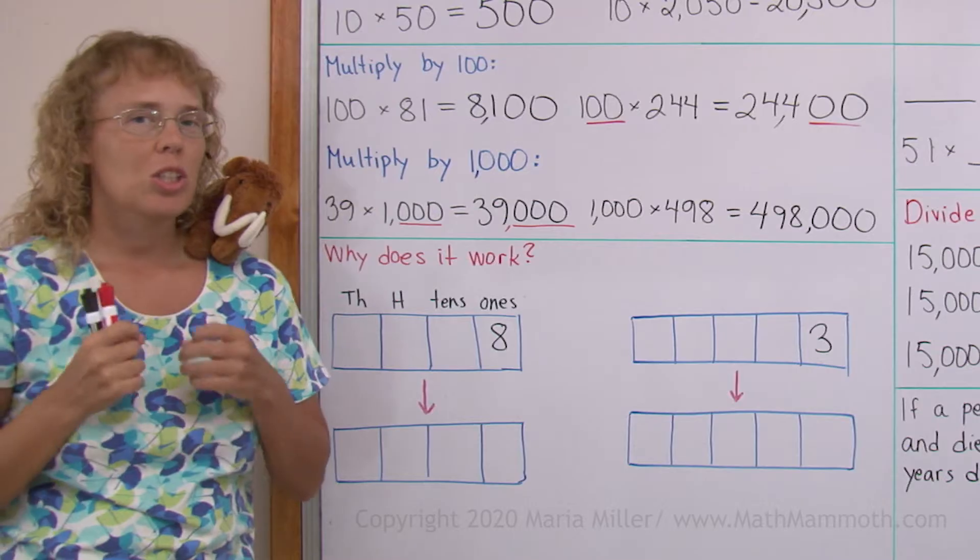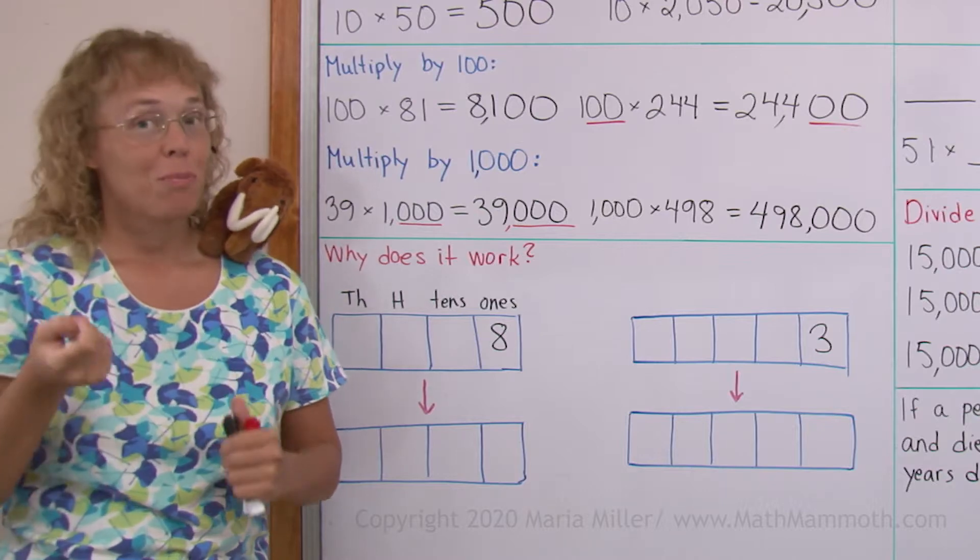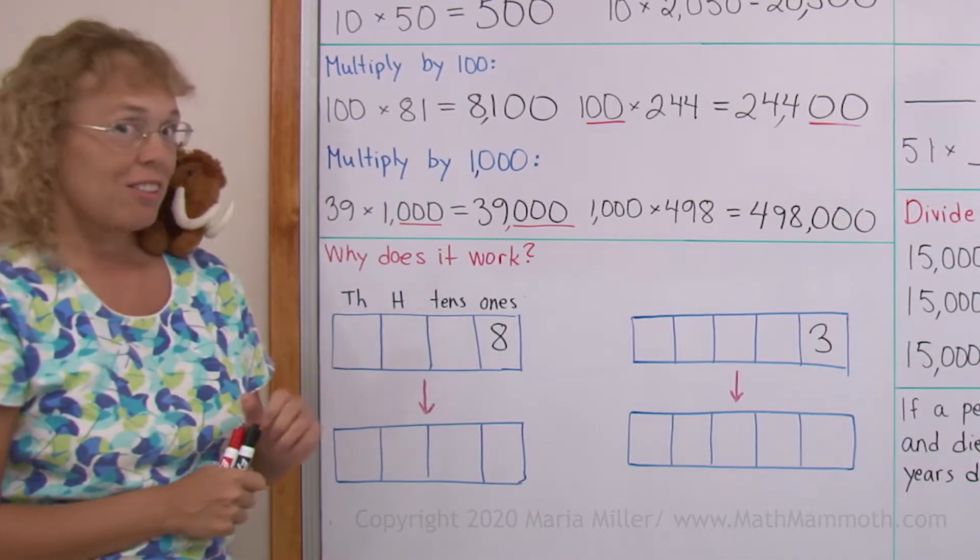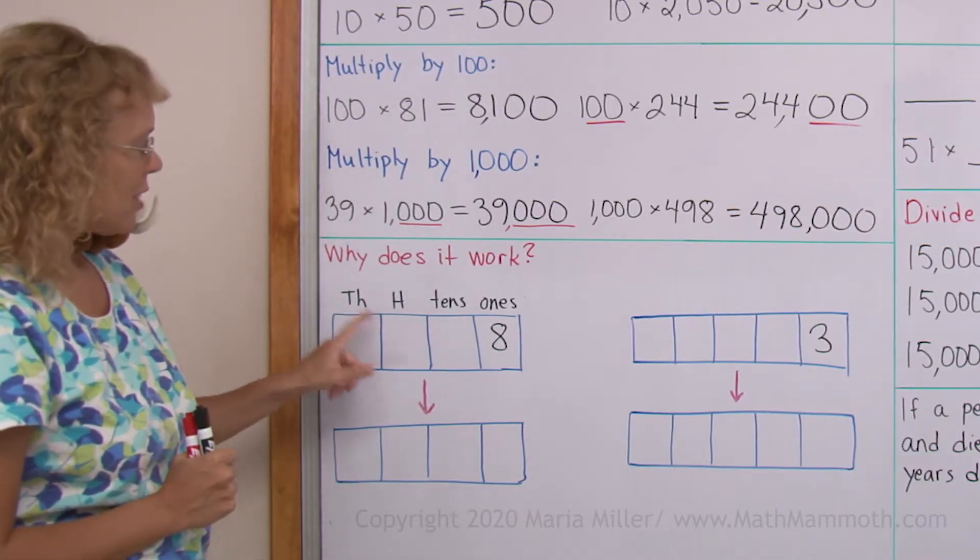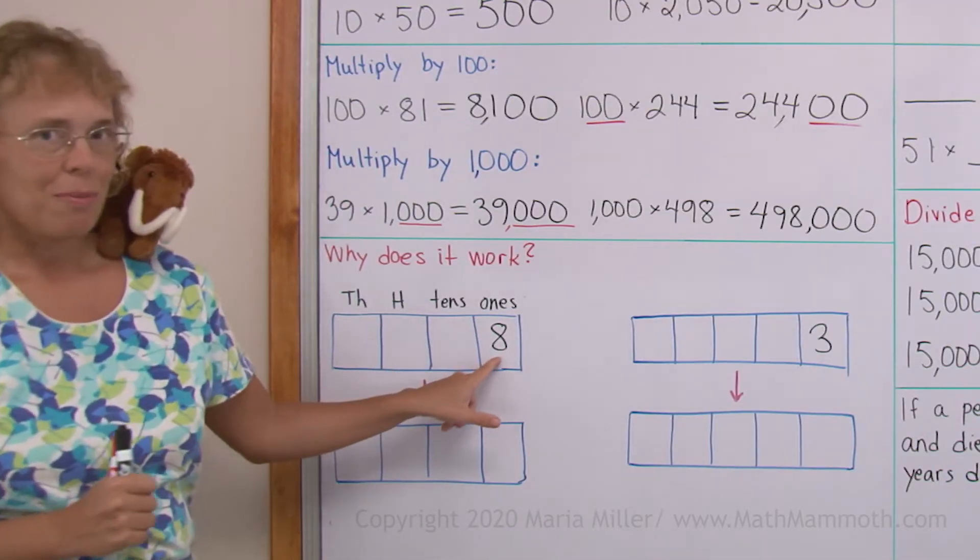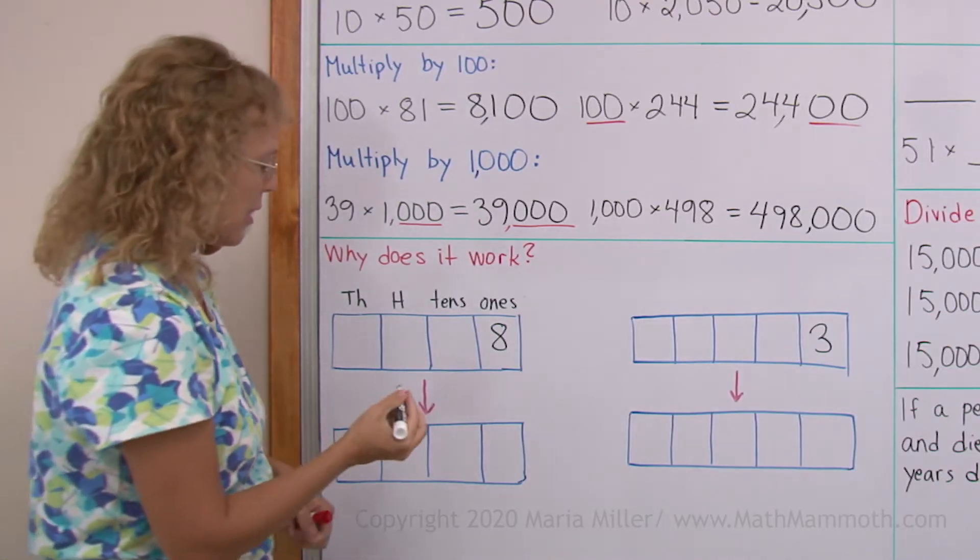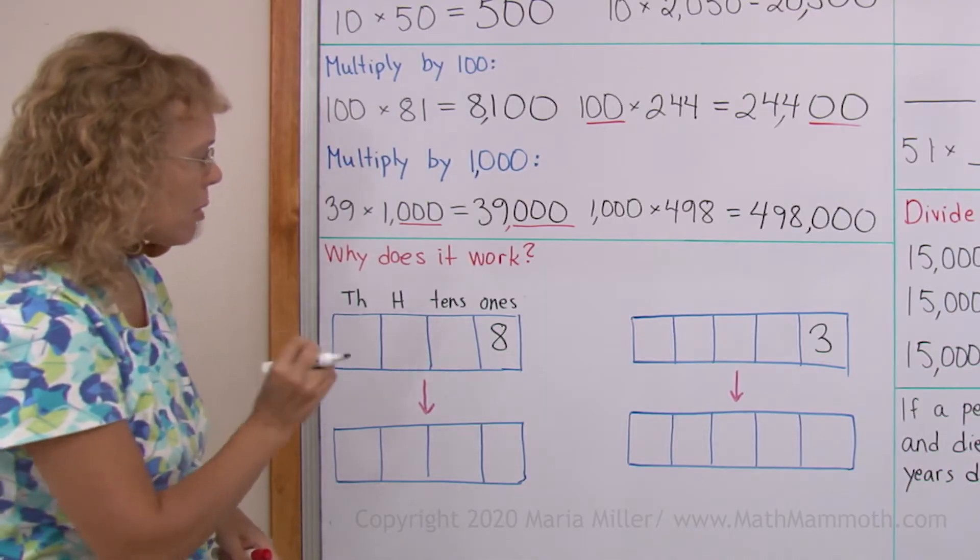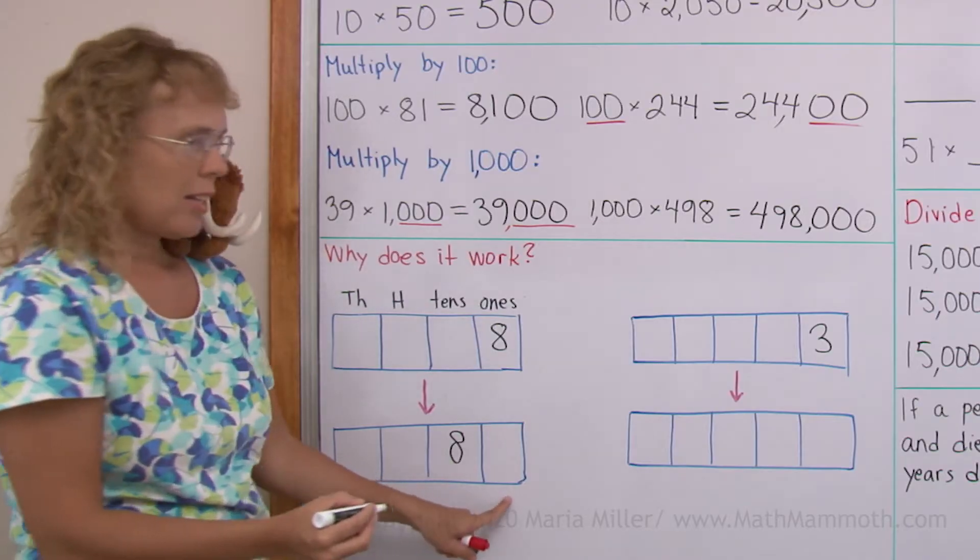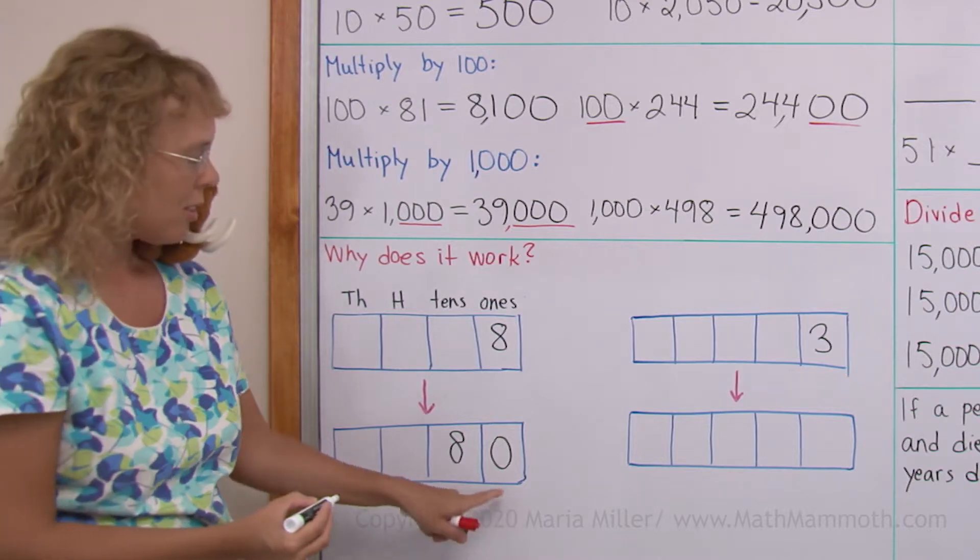Now let's look a little bit at why does it work. It's based on the place value system we use with our numbers. Here I have a place value chart. TH would mean thousands and then hundreds, tens, and ones. And I have a number here, eight. When we multiply it by ten, eight times ten, you know what it is. It's 80, right? Basically what happens is these eight ones become eight tens. And then I need to write a zero here in this empty space. 80. So there's a zero there.